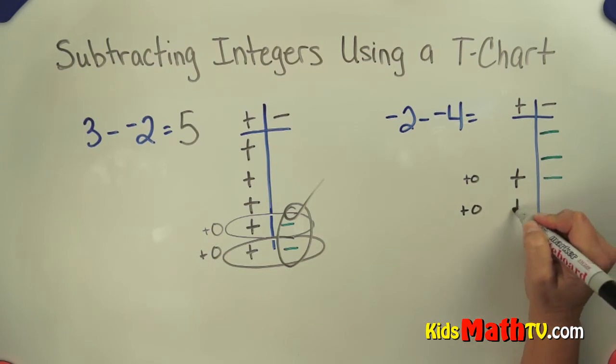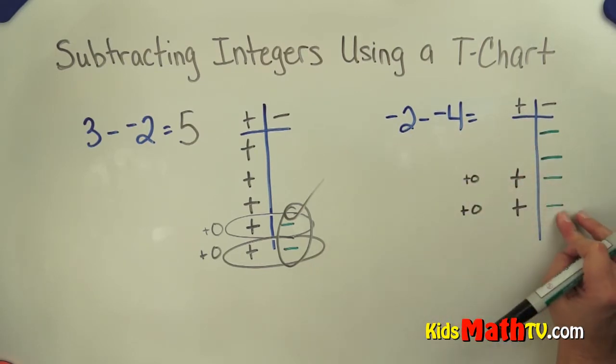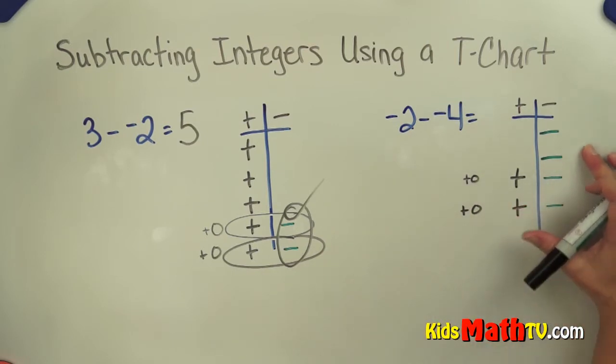So I'm going to add another 0, a positive and a negative. I still have just 2 negatives here because negative 2 and 0 and 0 is still negative 2. But now I have 4 negatives here that I can take away. So I'm going to group those 4 negatives and take them away.